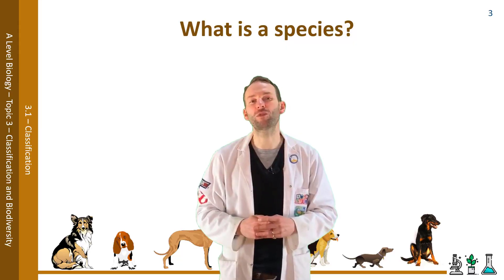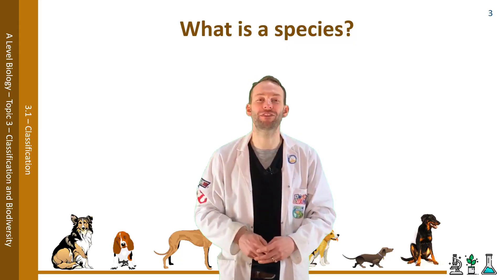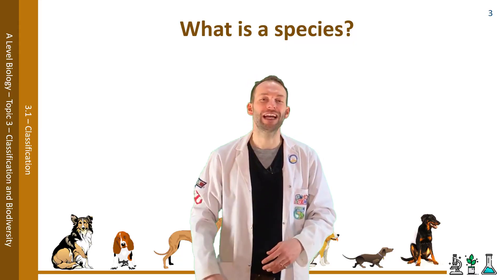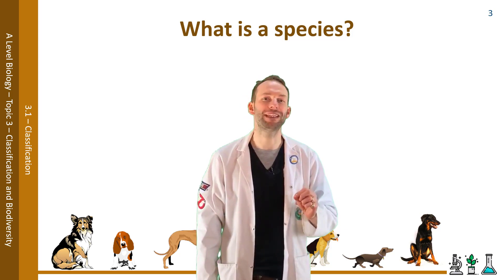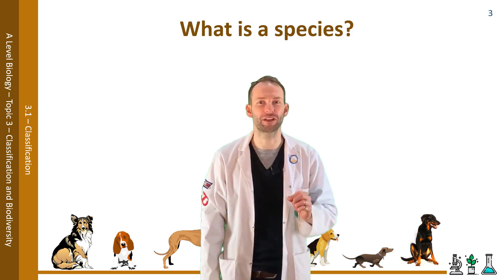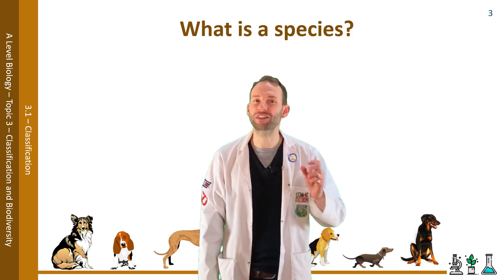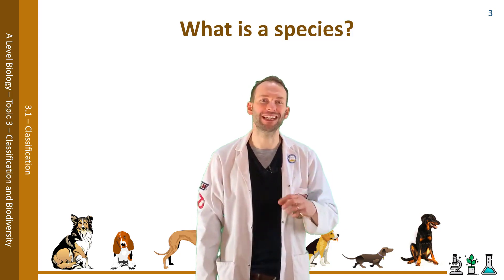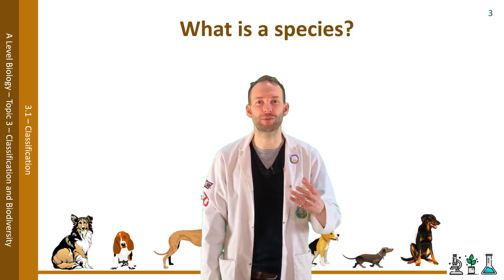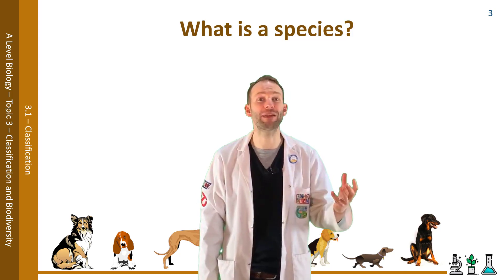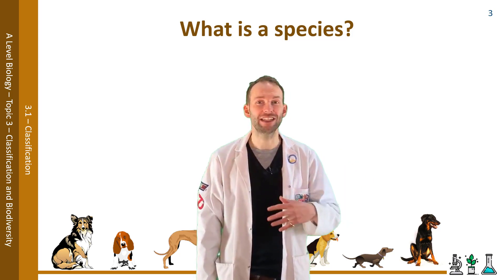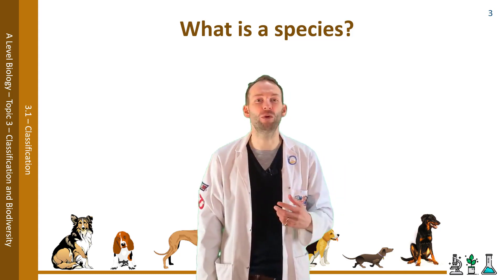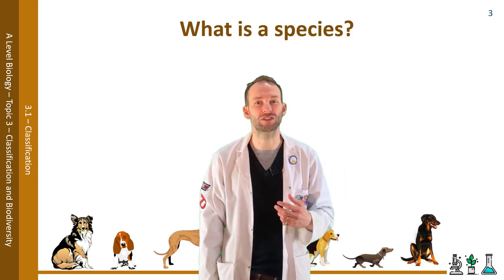This brings us to the question: if the species is the lowest form of classification, how do we define exactly what a species is? When you've discovered a species, how do you know it's a new species? How many species have become extinct? These are all really important questions.